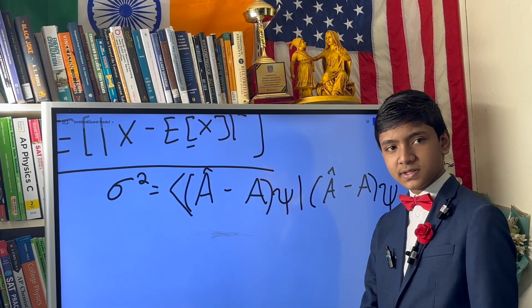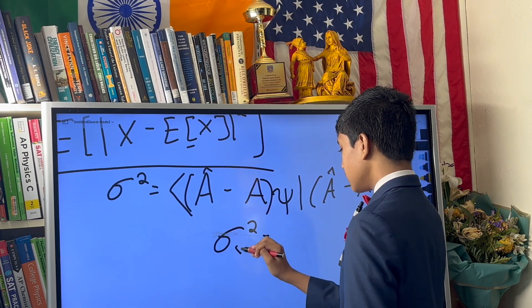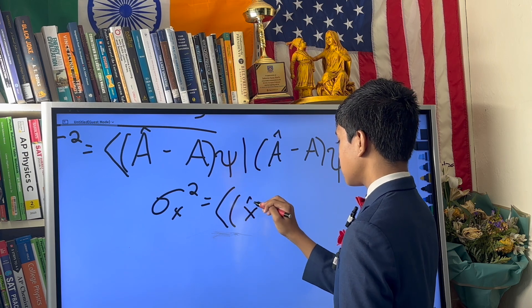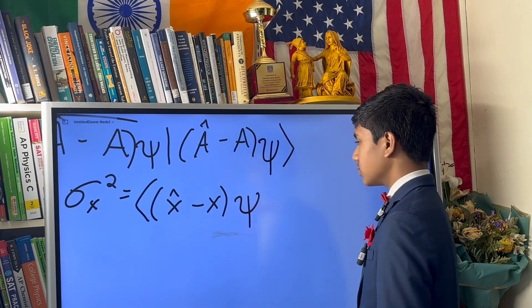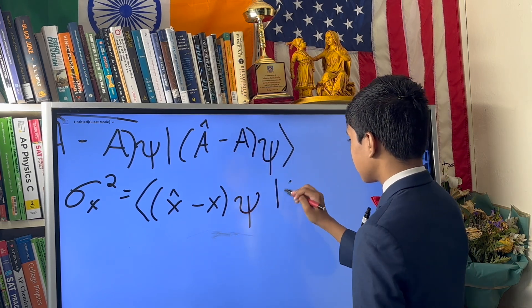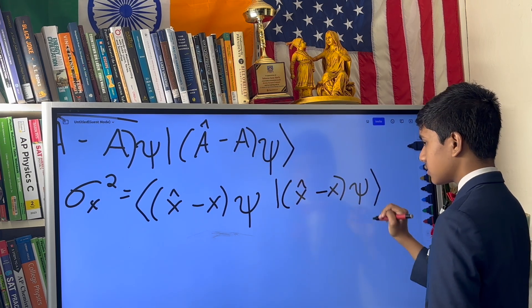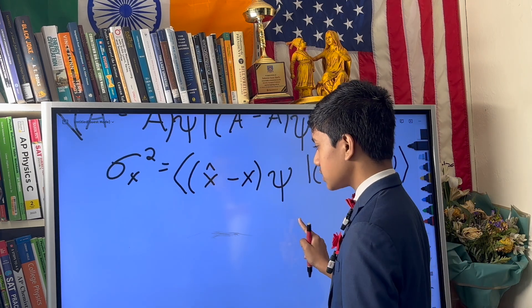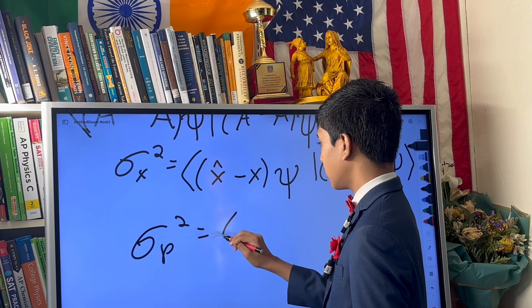Now if we're talking about position in specific, this is going to be the position operator multiplied by, or minus position, multiplied by psi, and inner producted with itself. And for momentum, similarly, you're going to have the momentum operator over here.